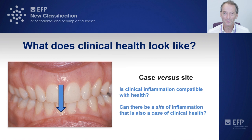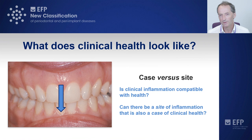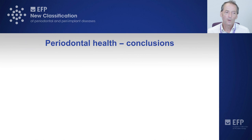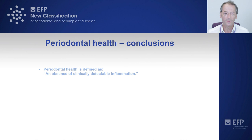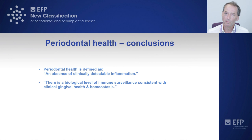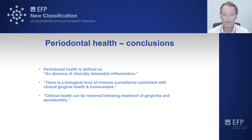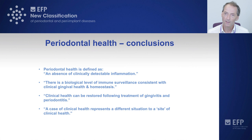This patient's target is to treat those sites of gingival inflammation even though they're clinically healthy as a case — we still want every site to be healthy if we can possibly achieve that, but we recognise that in the majority of the population, that's just not logistically possible. We concluded that periodontal health could be simply defined, in a reductionist approach, as an absence of clinically detectable inflammation. We accepted a biological level of immune surveillance consistent with gingival health and homeostasis, and recognised that health could be restored following treatment of gingivitis and indeed of periodontitis. A case of clinical health represents a distinct entity to a site of clinical health — an important discriminator highlighted in the consensus report.